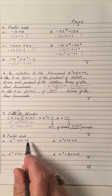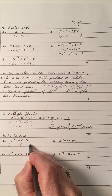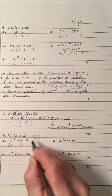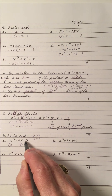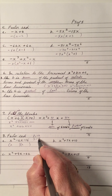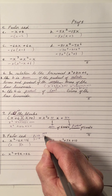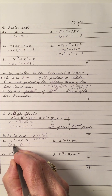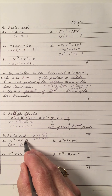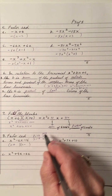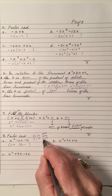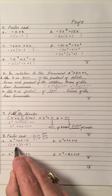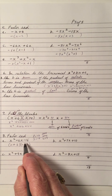Factor: we have a trinomial, no GCF, so this is factorable with double brackets. x squared gives x and x. The product is negative 16 and the sum is negative 6. Because the product is negative, it's guaranteed to have plus and minus signs. Factors of 16 are 1 and 16, 4 and 4, 2 and 8. Because the product is negative, the factors differ by 6, so it must be 2 and 8. The negative 6 in the middle means the larger number must be negative, the smaller positive. Add the two: negative 6. Multiply the two: negative 16.